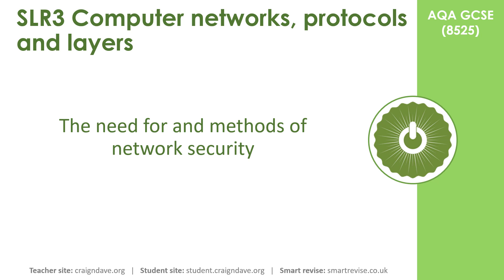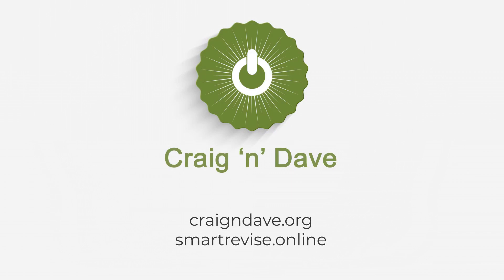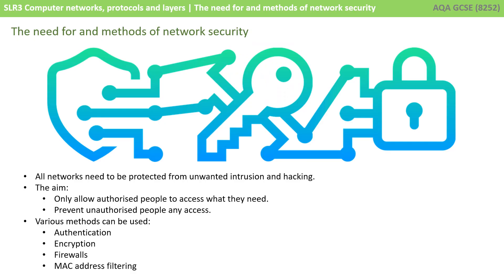In this video, we take a look at the need for and the methods of network security. All computer networks, whether it's your home network, a school network or a large organisation network, should be protected from unwanted intrusion and hacking. The overall aim is simple: only allow authorised people to access what they need and prevent unauthorised people any access.